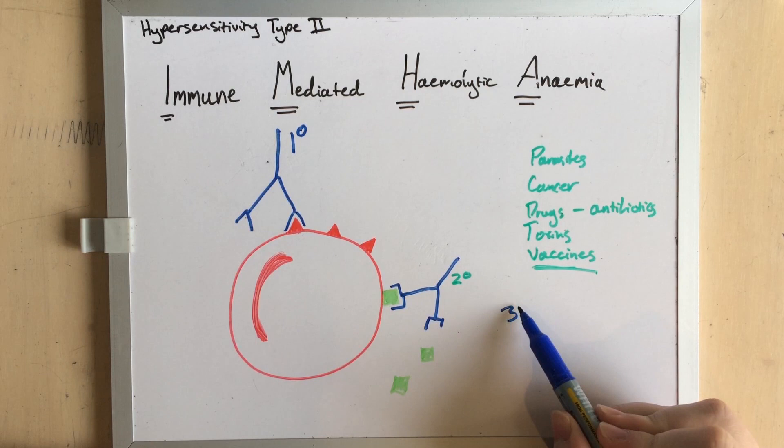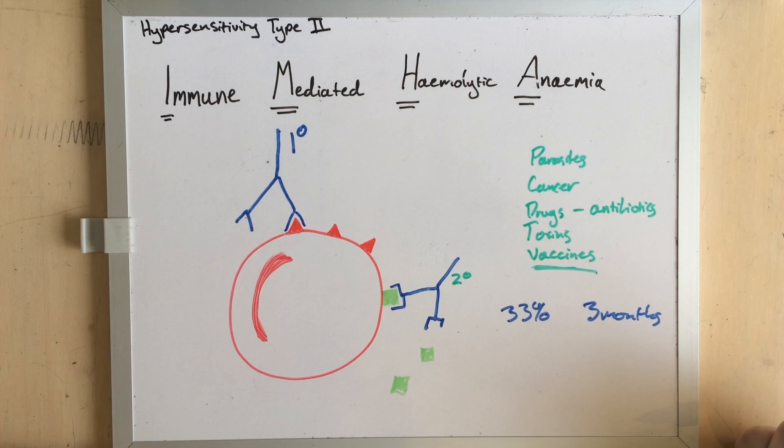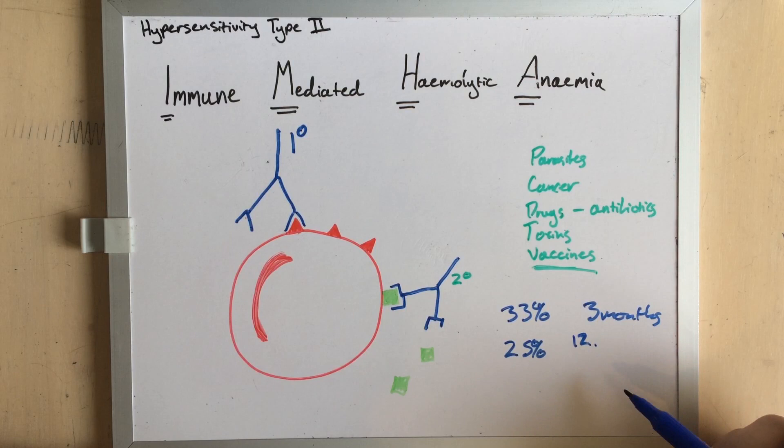Approximately 33% of cases of IMHA occur within three months of a vaccine. That sounds like quite a lot, but if it was purely random chance, you'd still expect 25% of IMHA cases to occur within three months, because there's 12 months in a year. Just by chance. So there's some association.